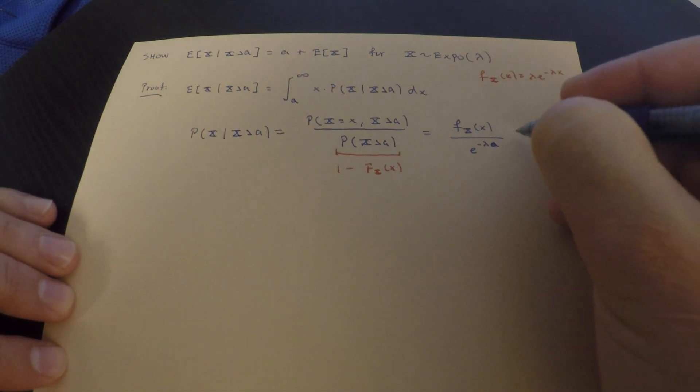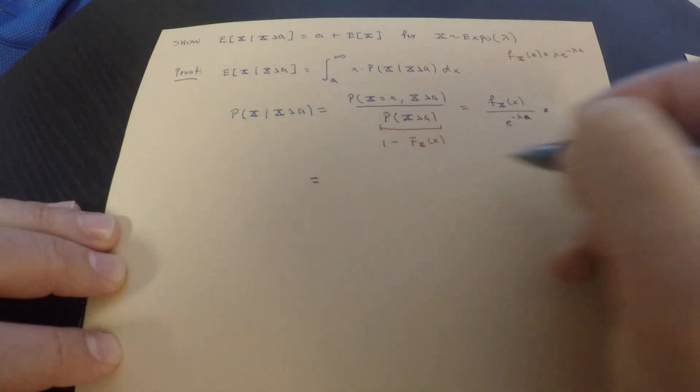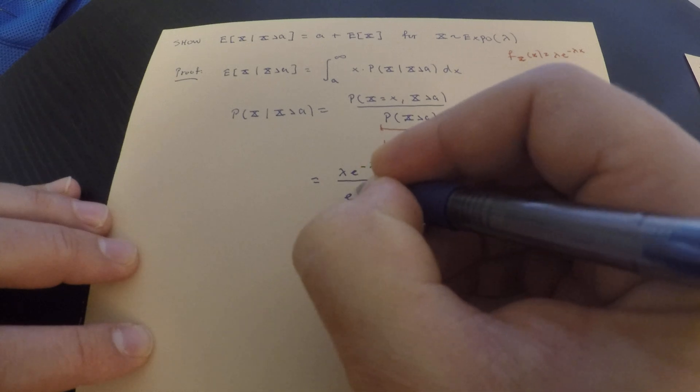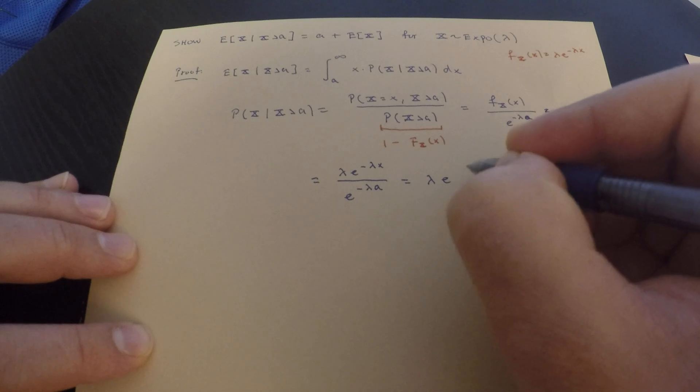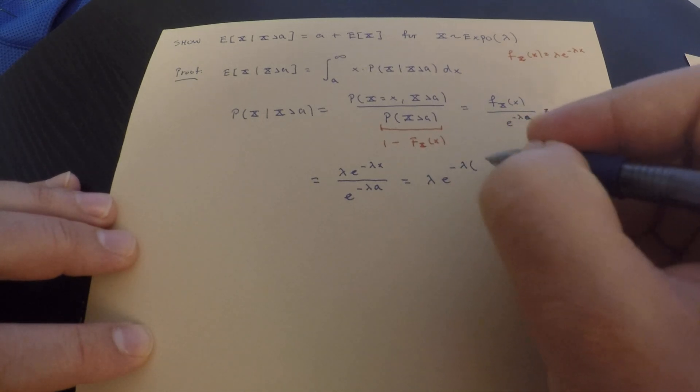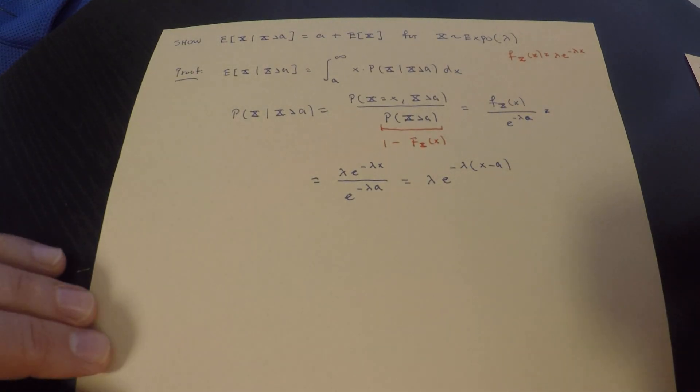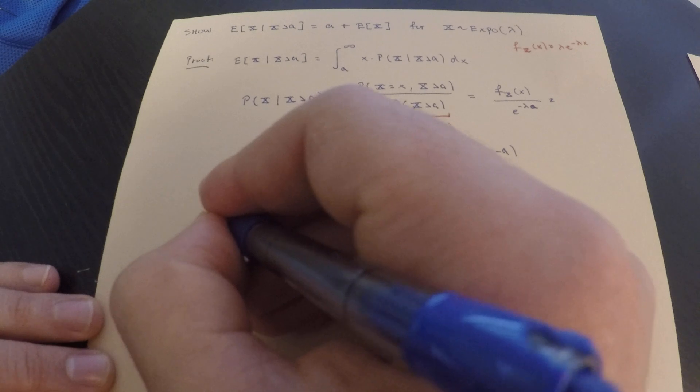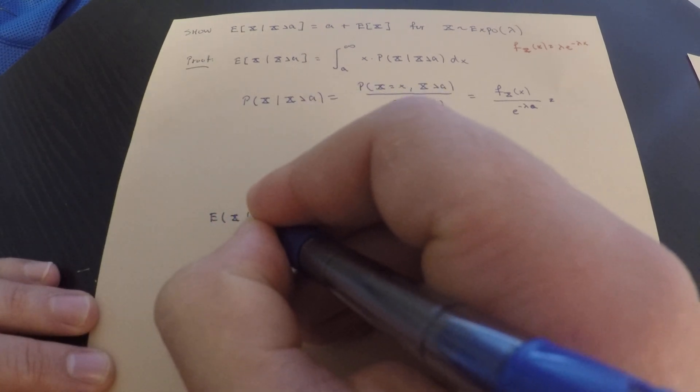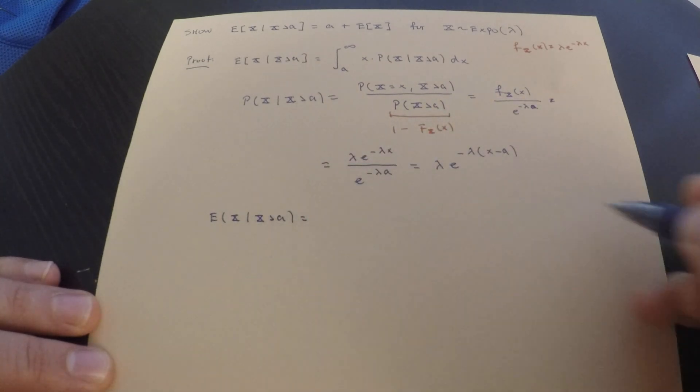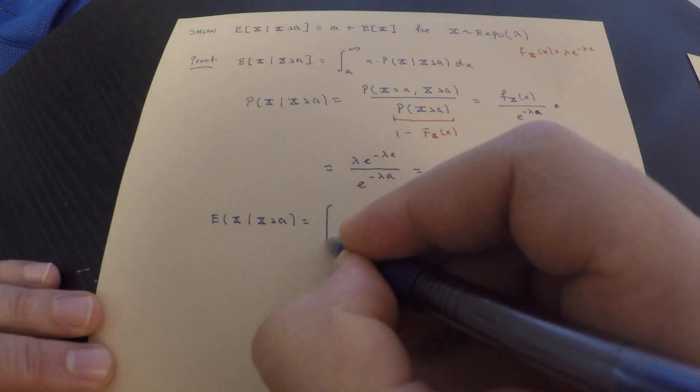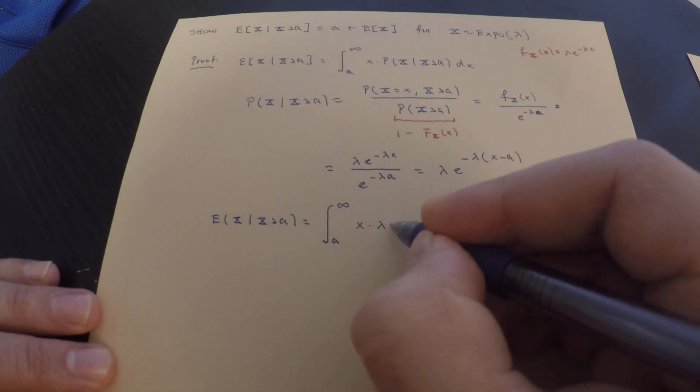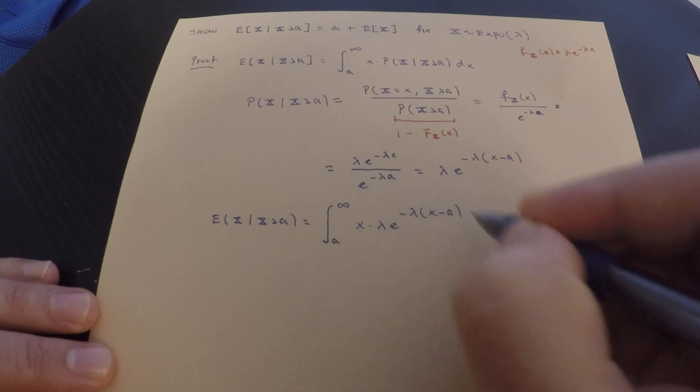Now, what does this become? So this is equal to lambda e to the negative lambda x, divided by e to the negative lambda a, which is equal to lambda e to the negative lambda times x minus a. So nothing crazy going on, just some algebra. Now we have our integral. So then we have this expected value of x, given x is greater than a, is now the following. It's just the integral from a to infinity of x times lambda e to the negative lambda x minus a, dx.